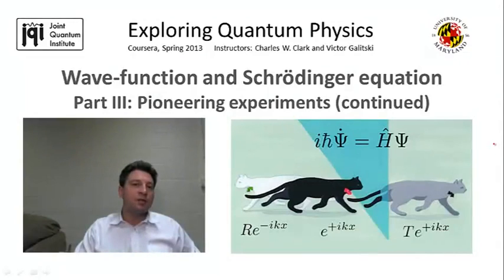While the photoelectric effect clearly suggested that light sometimes can behave as a beam of particles, the other players in the effect, the electrons, were not really suspected to represent anything but particle-like entities.